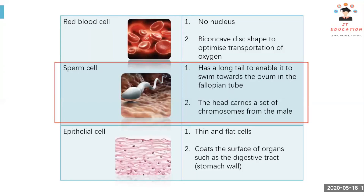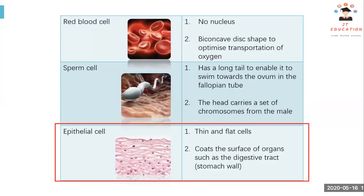Sperm cells have a long tail which enables them to swim towards the ovum in the fallopian tube. The ovum means egg — the egg cell produced by females — and the fallopian tube is part of the female reproductive system. The sperm cell needs its tail to swim and fertilize the egg. The head of the sperm cell is the part that carries the chromosomes, or genetic information, from the male.